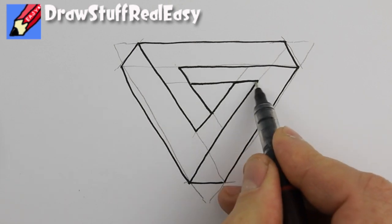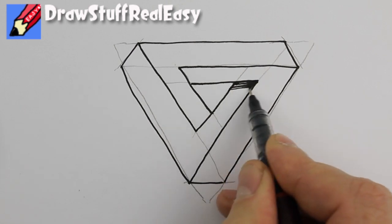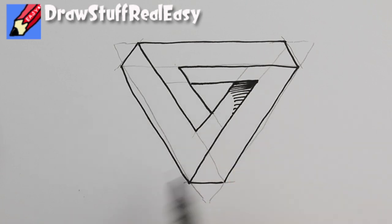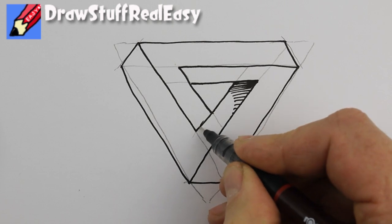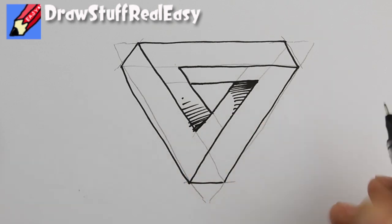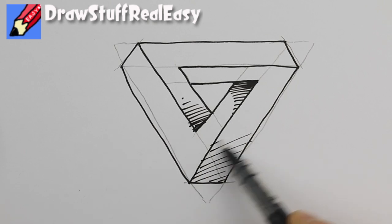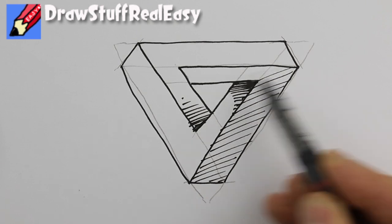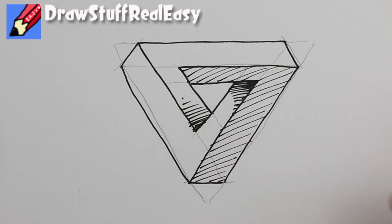And then you can make it better by putting shading in there, these lines getting further apart. Similarly here, shading with the lines getting further apart like that. And then you can bring the whole thing to life a bit more by shading in, which will really confuse everybody.